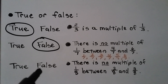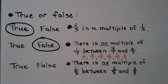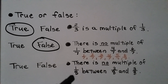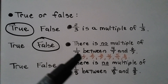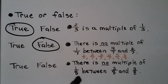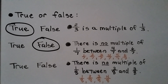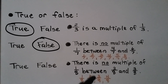Is this statement true or false? There is no multiple of 1/8 between 2/8 and 3/8. The multiples of 1/8 are going to have 8 as the denominator, and the numerators go up 1, 2, 3, 4, 5, 6. So is there a multiple of 1/8 between 2/8 and 3/8? If we write the multiples of 1/8: 1/8, 2/8, 3/8, 4/8, and so on — there is no multiple between 2/8 and 3/8. So this statement is true. Because they are unit fractions, the denominators are the same and the numerators go 1, 2, 3, 4, 5, 6, and so on.